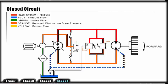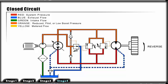The other check valve keeps the high system pressure isolated from the low boost pressure. When the auxiliary pump has replenished the low boost side, pressure builds slightly opening the charge pressure relief valve. The charge pressure relief valve opens and fluid is directed back to the tank. The charge pressure relief valve maintains a constant pressure in the low boost pressure line, which charges the pump.